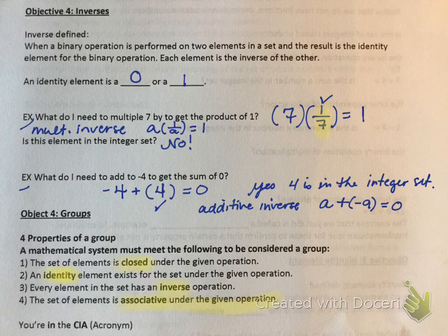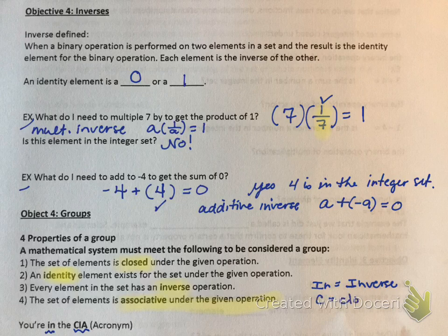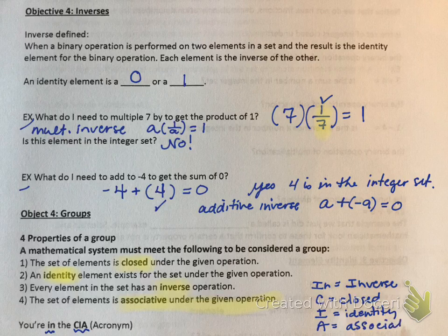I made a little acronym that works with this: you're in the CIA. The N part stands for inverse. In CIA, the C stands for closed, I stands for identity, and A stands for the associative property. So to be a group, it has to meet all four criteria.